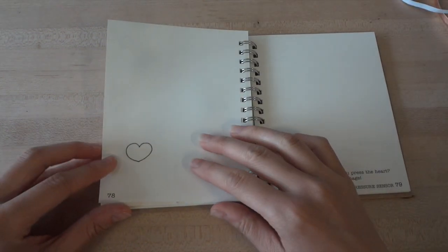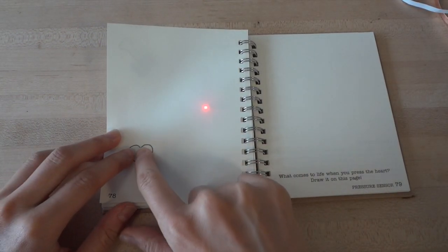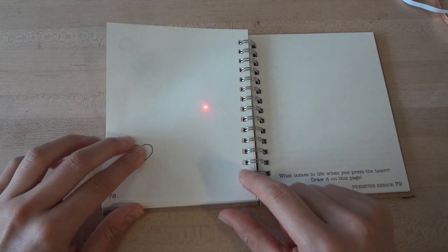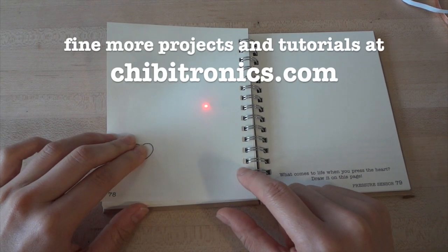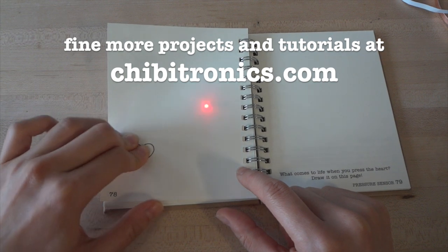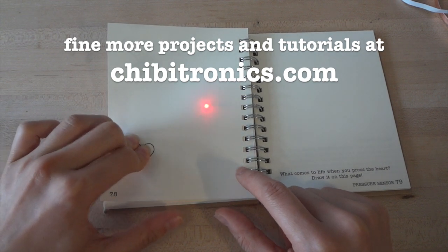When you press on the heart, a little red light comes on, and the harder you press, the brighter the light. What's coming to life? Come share your projects with us, and find more tutorials like this one at chibitronics.com. Thank you!